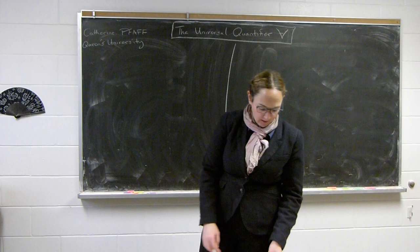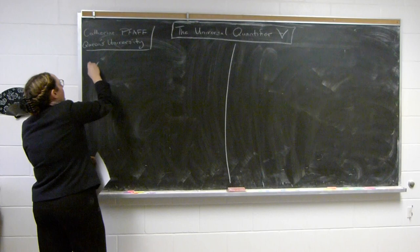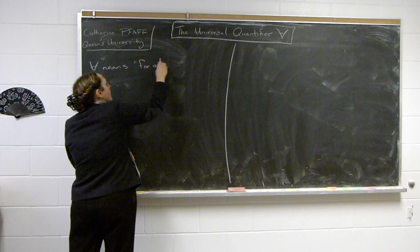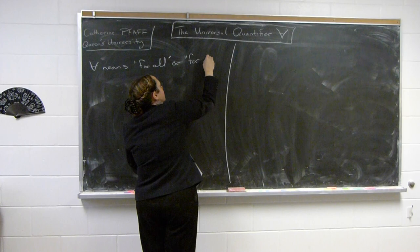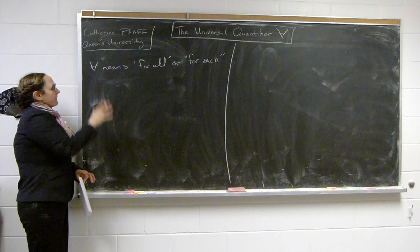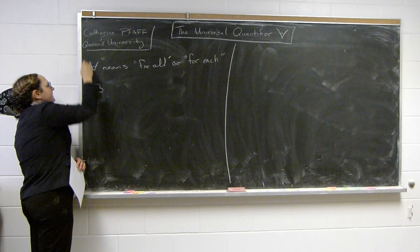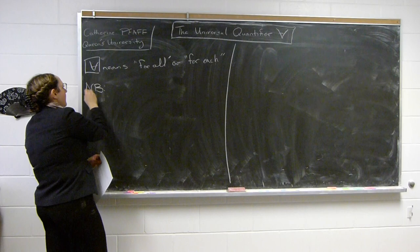So 'for all' means for all. But a lot of times it's more precise to say 'for each,' because whatever you're talking about depends on the individual object. So this symbol means 'for all' or 'for each.'